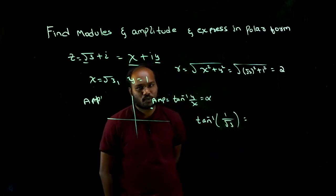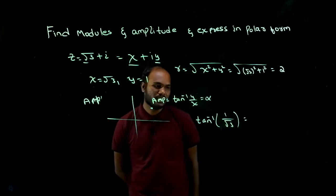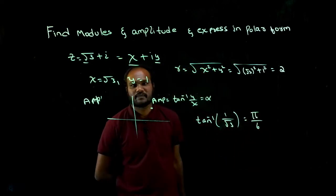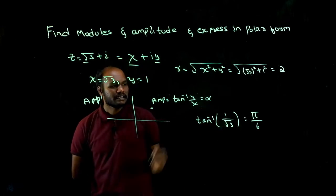Tan inverse of 1 by √3 is 30 degrees, that is π over 6. That's correct, π over 6.